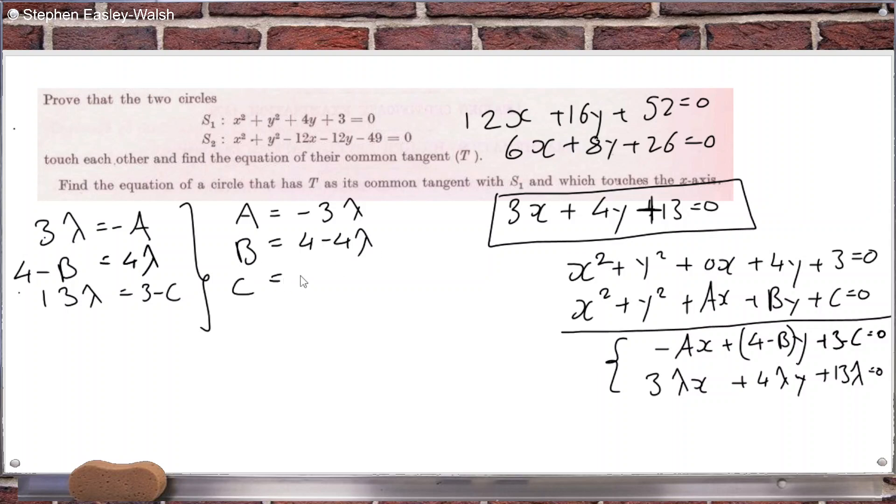So if I put these together, I can get a equals minus 3 lambda, b equals 4 minus 4 lambda, and c equals 3 minus 13 lambda. So the circle is going to be x squared plus y squared minus 3 lambda x plus 4 minus 4 lambda y plus 3 minus 13 lambda equals 0. Now we can sub in a point to get the lambda and find the circle.